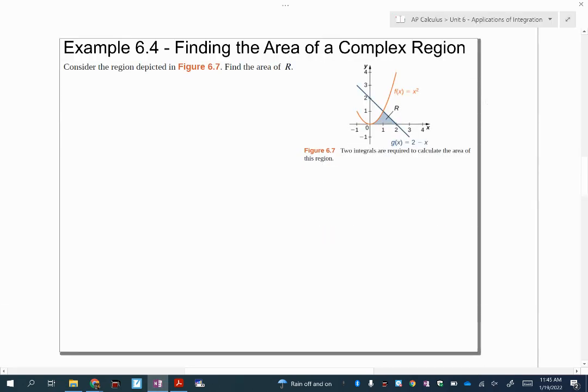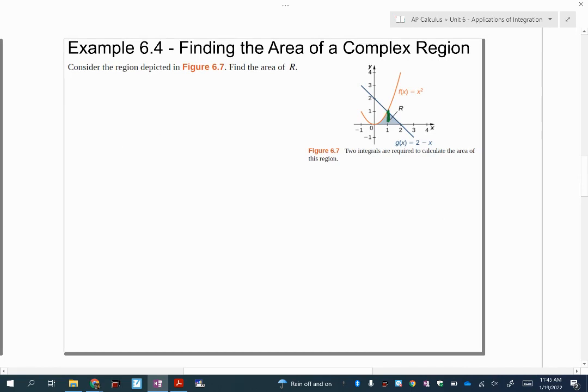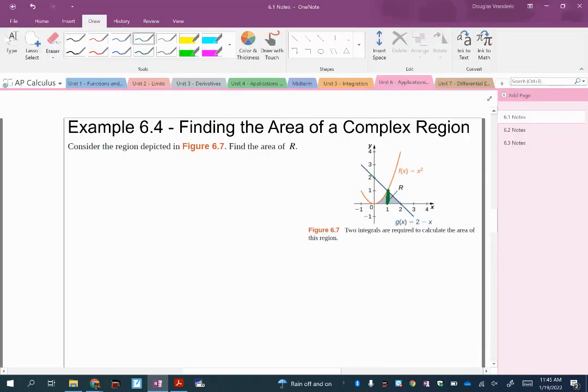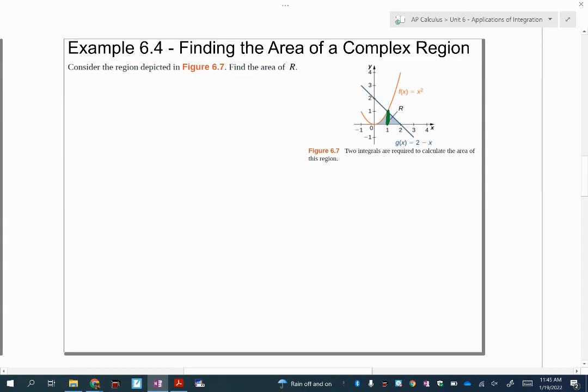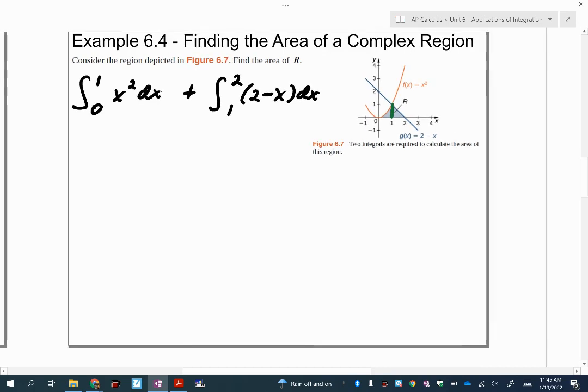I'm going to use between 0 and 1, which is just the integral of the orange one, x squared, and then between 1 and 2 is just the blue line and the x-axis, which is 2 minus x. So to find this area, I'm going to do two integrals. I'm going to do the first one, which is the integral from 0 to 1 of x squared dx plus the integral from 1 to 2 of 2 minus x dx. It's kind of like two different pieces to solve.